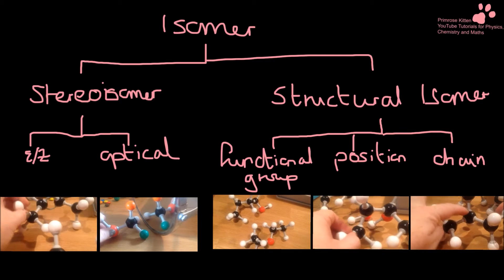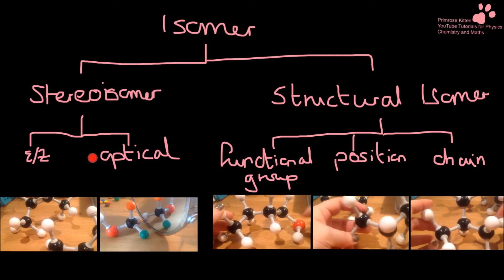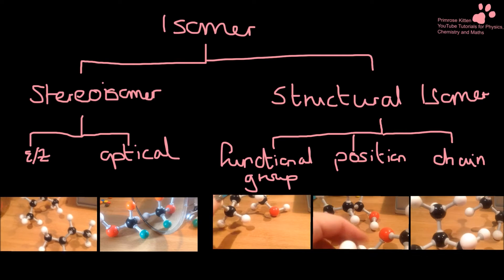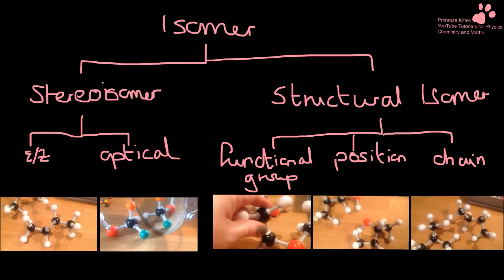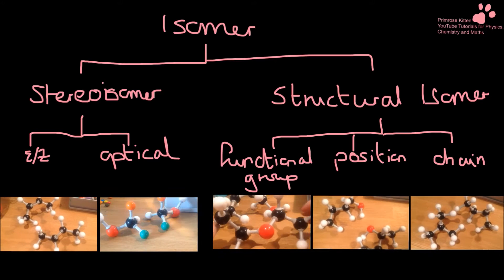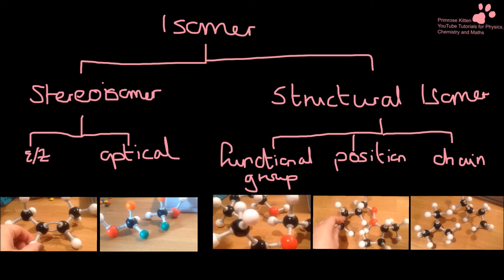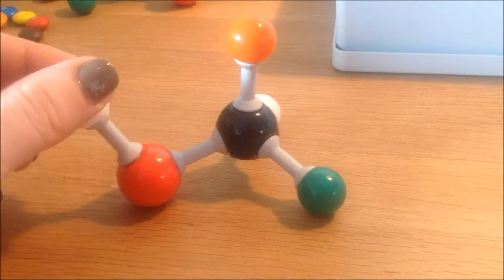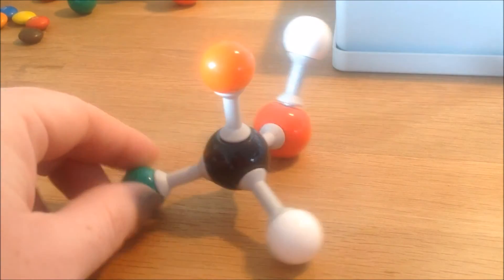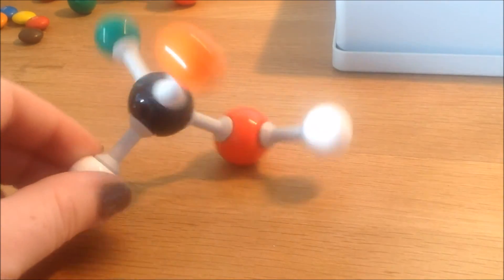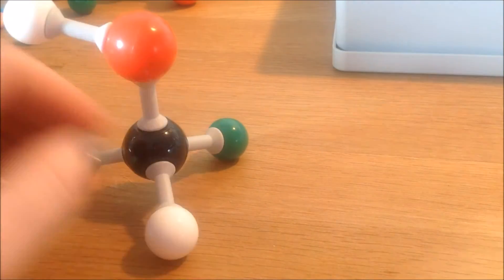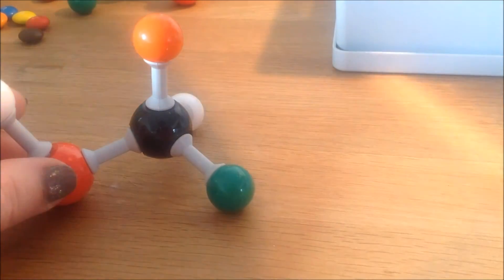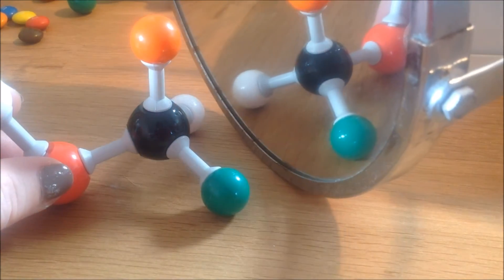When we are talking about chiral carbons, we are looking at optical isomers - this part of isomerism where you've got two mirror images that are non-superimposable upon each other. And the reason for this is because of the chiral carbon in the middle. If we look at this molecule here, you can see that the carbon in the middle has four different groups attached to it. And that is the important thing - that is what we're looking for when we have chiral carbons.